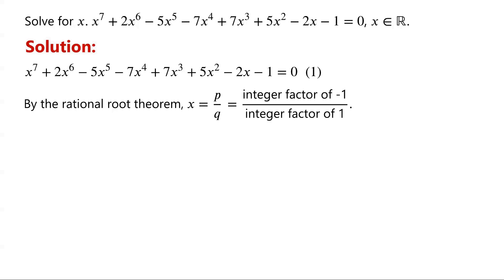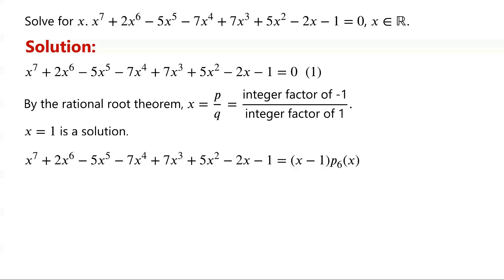It's easy to check that 1 is a solution of the equation, but negative 1 is not. So the left hand side of equation 1 can be written as x minus 1 times P6 of x, where P6 of x is a polynomial of degree 6, which is the quotient when the left hand side of equation 1, a degree 7 polynomial, is divided by x minus 1.